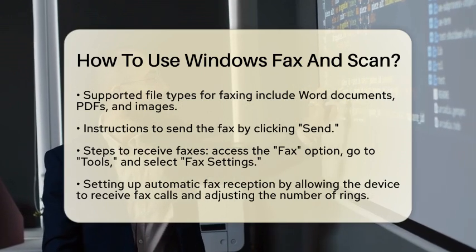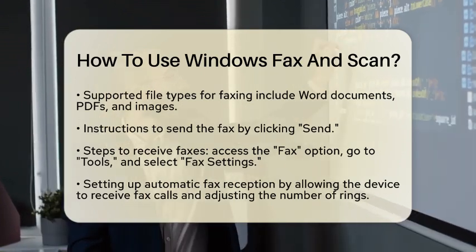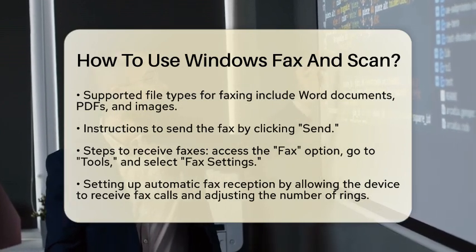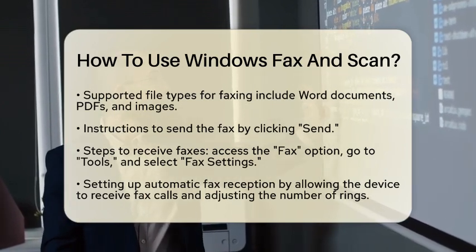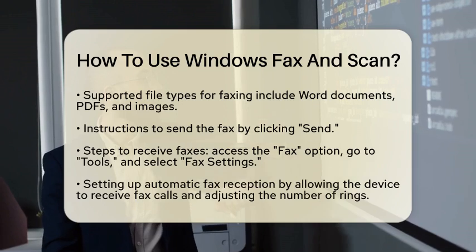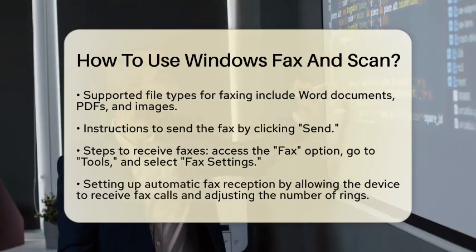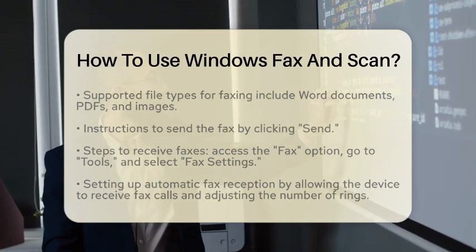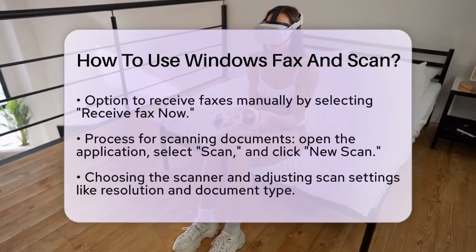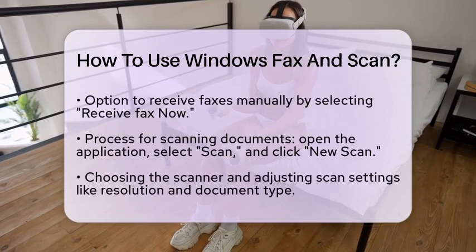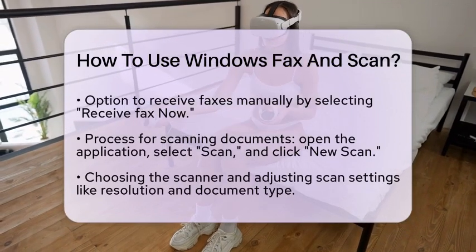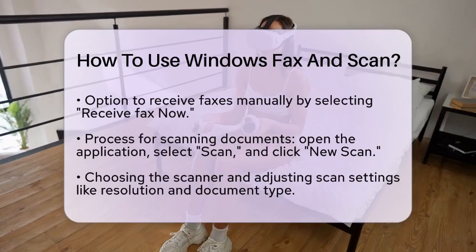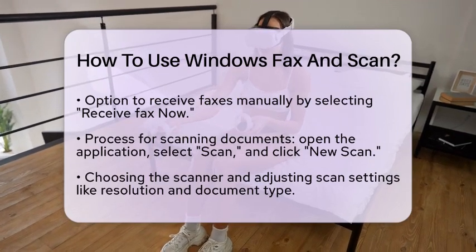Now let's talk about receiving faxes. To ensure you can receive faxes automatically, open Windows Fax and Scan and go to the Fax option. Click on the Tools tab and select Fax Settings. Under the General tab, check the box next to Allow device to receive fax calls. You can also set how many rings should occur before the fax service answers. Click OK to save your changes. If you want to receive a fax manually, just click Receive Fax Now from the top toolbar.